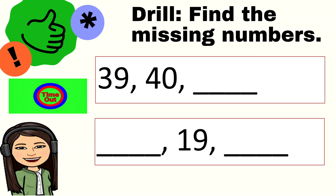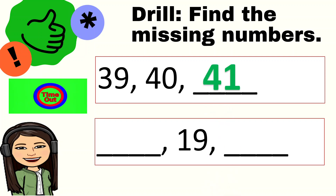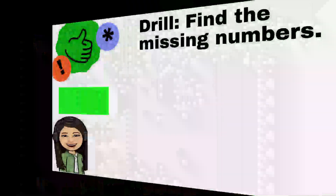Okay, let's check. If we count starting from 39, next is 40. What's next after 40? Yes, it's 41. What about the number before 19? Yes, it's 18. And after 19, it's 20. Very good.